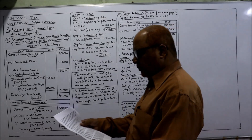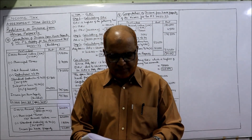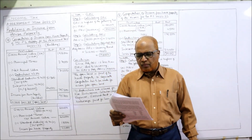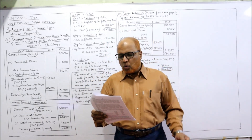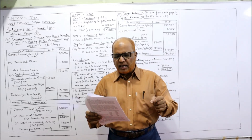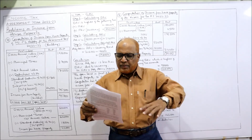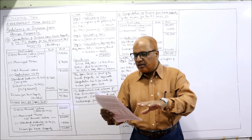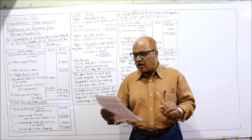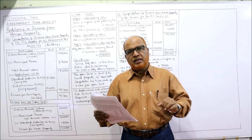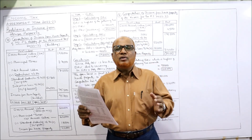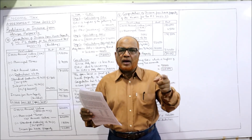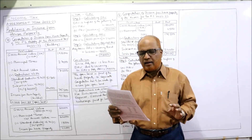Now see the seventh problem. Problem number seven — Sri P.S. Ruddy is the owner of a house property consisting of a building, open land for car parking, and a kitchen garden. That means the complete house property includes a building, open land for car parking, and kitchen garden. We have to separately calculate the income from house property of the building and the income from house property of the open land.